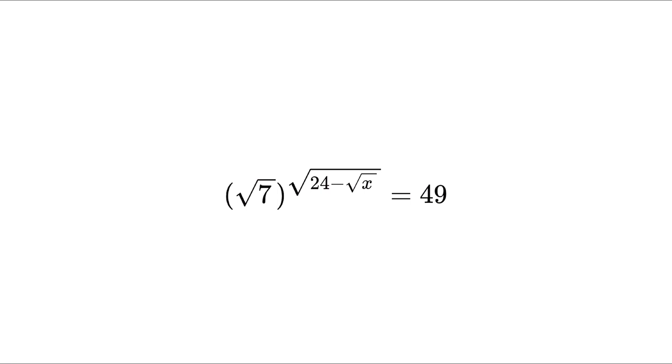Hello everyone, welcome back. Today we are going to solve this question. Can you solve this? If you can, pause the video and take a try. Otherwise, let's see the solution. So this is our question: (√7)^(√(24-√x)) = 49. In this question, we have to find the value of x.